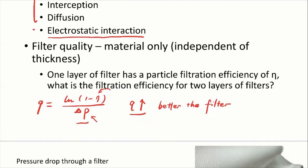Here is a question: what happens if we have two layers of filters? What is the filtration efficiency? If one layer has a filtration efficiency of η, what is the filtration efficiency for two layers? Remember, we are discussing filter quality, not filtration efficiency. Theoretically, the filtration efficiency should be higher with more layers.